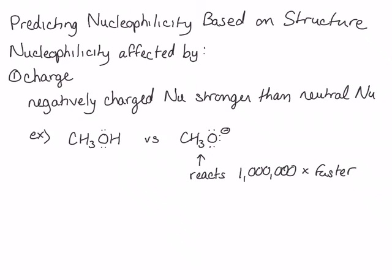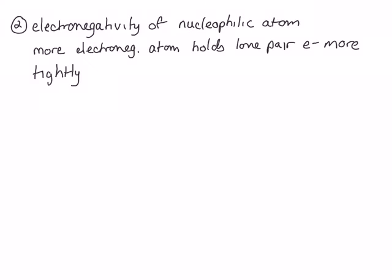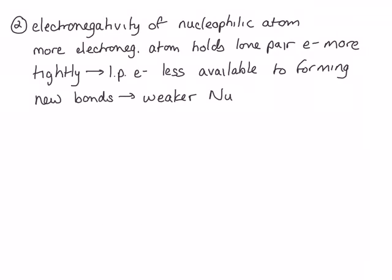Another thing that affects the strength of a nucleophile is the electronegativity of the nucleophilic atom. Remember that electronegativity is a measure of how much an atom wants electrons. Therefore, a more electronegative atom holds its non-bonding electrons more tightly. This means that those lone pair electrons are less reactive to forming new bonds, making the atom a worse nucleophile. Let's look at some examples.